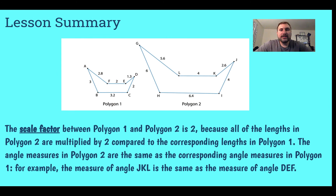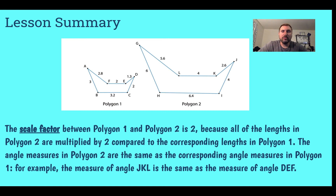They also have corresponding angles — angle DEF corresponds to angle JKL. Remember, when reading a three-letter angle, the middle letter is the vertex of the angle being described. In addition to corresponding parts, we learned about scale factor. The scale factor between polygon 1 and polygon 2 is 2, because all of the lengths and distances were doubled — multiplied by 2. The angle measures, however, stay the same because corresponding angles are equal.